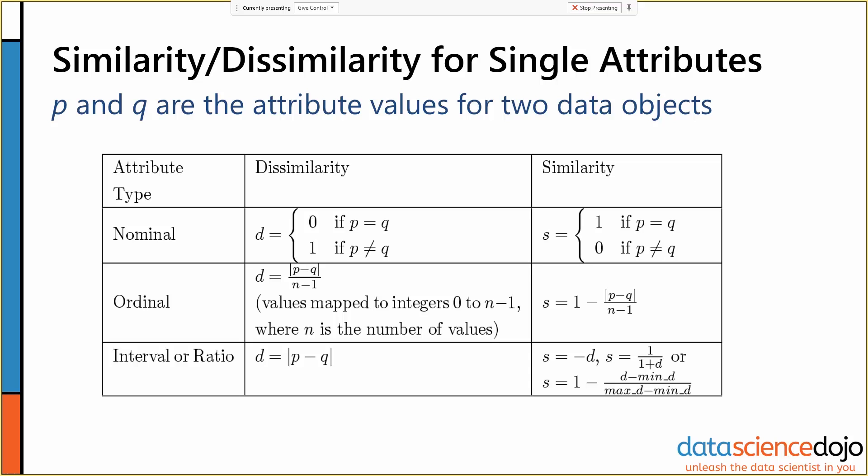So nominal data, we usually use this sort of binary similarity dissimilarity measurement, where dissimilarity for nominal is zero if the two values are the same, and one if the two values are different, and exactly the reverse for similarity.